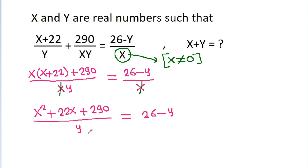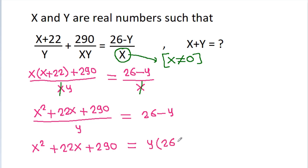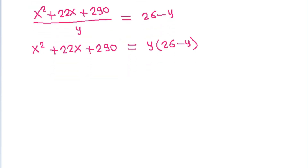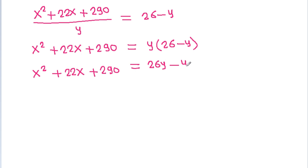And if we cross multiply, then x squared plus 22x plus 290 will be equal to y times 26 minus y. That gives us x squared plus 22x plus 290 is equal to 26y minus y squared.